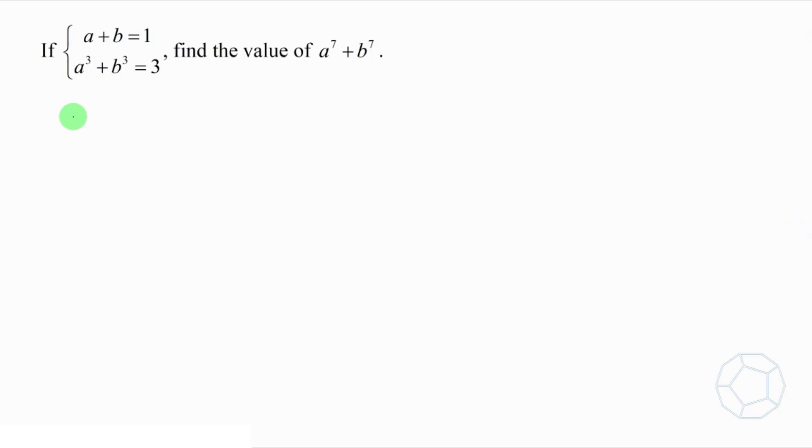Let's start with bracket a plus b whole cube. Expand directly or using binomial theorem, we get a cube plus 3a square b plus 3ab square plus b cube. On the left, we put a plus b equals to 1.